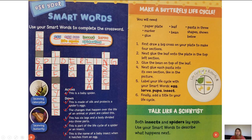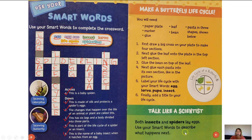Write 'Life Cycle of a Butterfly' as a title. Then draw an open circle starting where your cursor is, going all the way around, and stop — adding an arrow to show it keeps going over and over, repeating again. Then we have 'Talk Like a Scientist': both insects and spiders lay eggs — use your smart words to describe what happens next.